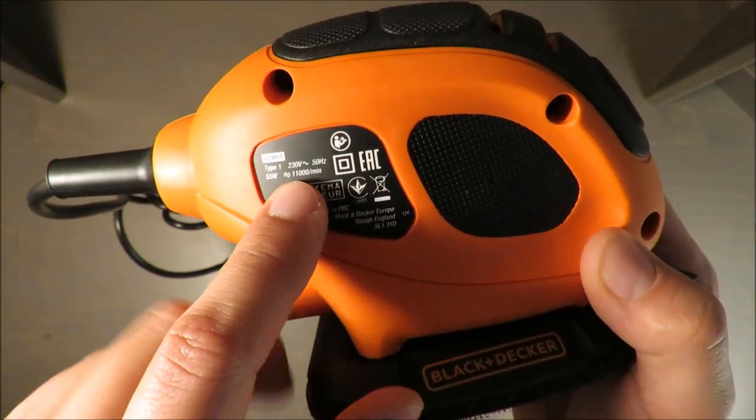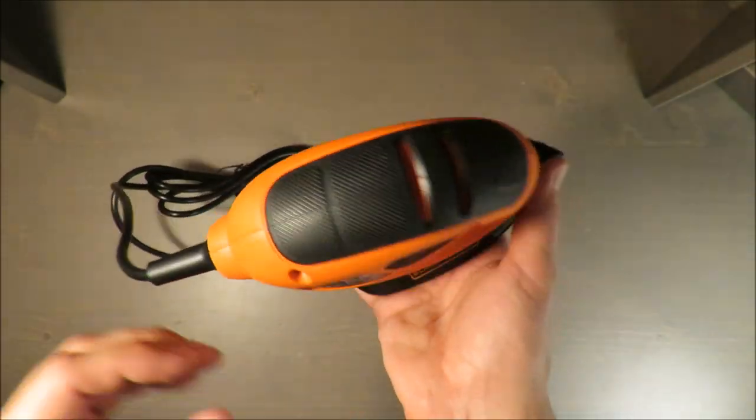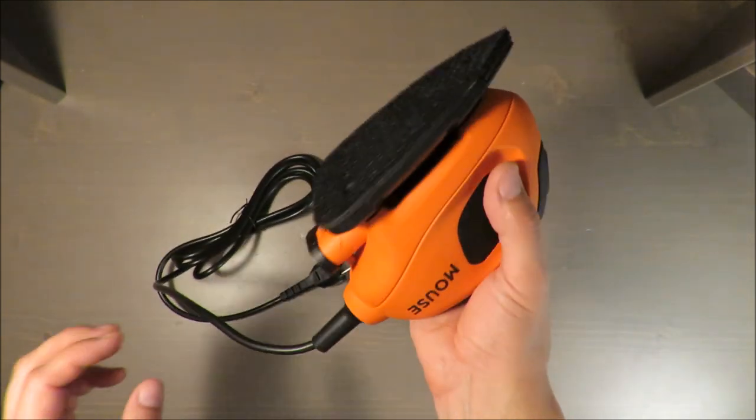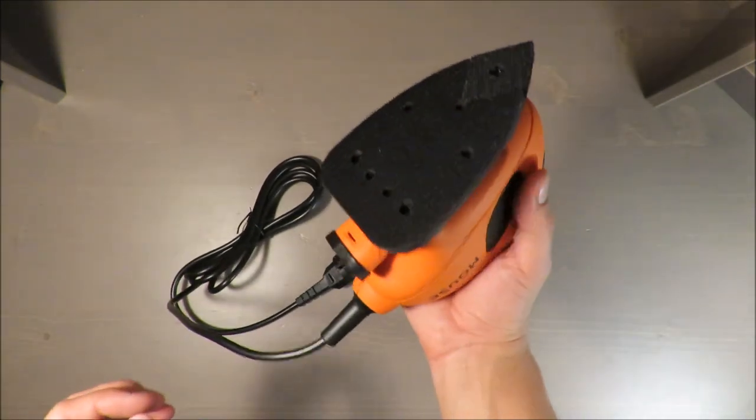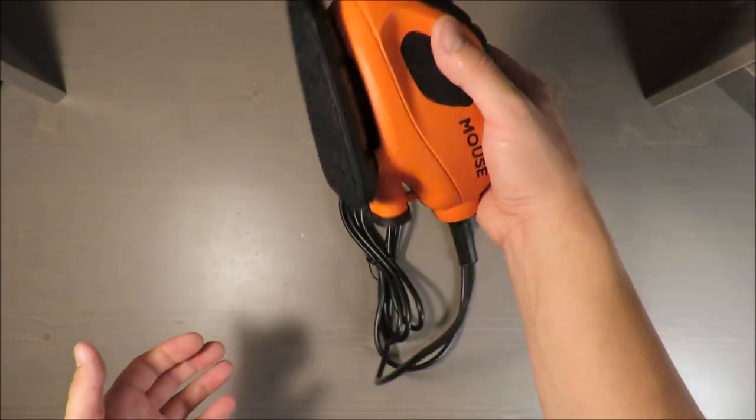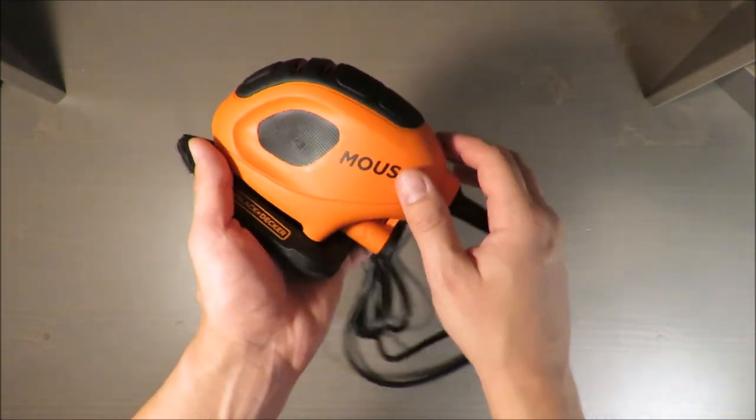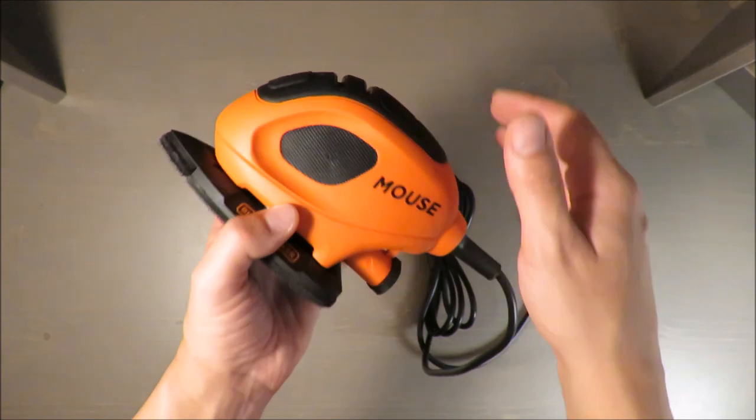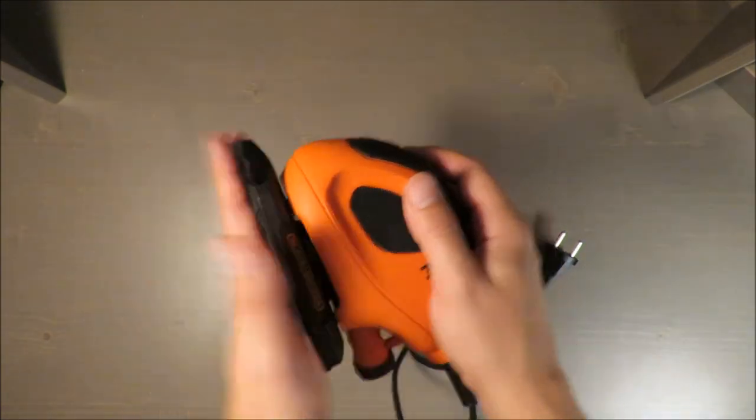Mouse grinder, more than enough for precise sanding activities. Very light, as I mentioned, 660 grams, so roughly half a kilogram, and very nice sanding paper on the bottom.